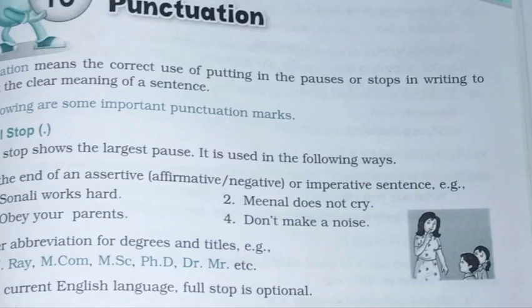After abbreviation for degrees and titles, we also put full stops. Like after a name when we are using it as an abbreviation — suppose someone's name is Bankim Nath Ray, he writes B.N. Ray. For degrees: M.Com. means Master of Commerce, so a full stop is put — M.Com. Similarly M.Sc. is Masters in Science, and Ph.D. means Philosophical Doctorate. Doctor, Mister — like that we use full stops after these. In current English language, full stop is optional for abbreviations, meaning you have to decide where to use it.